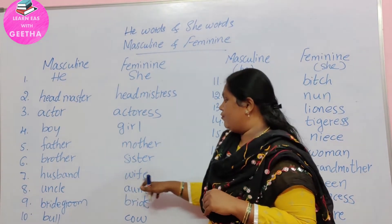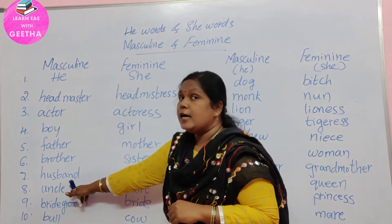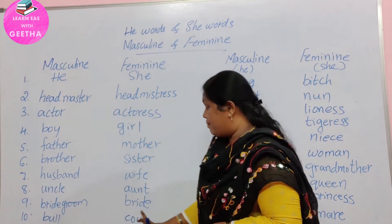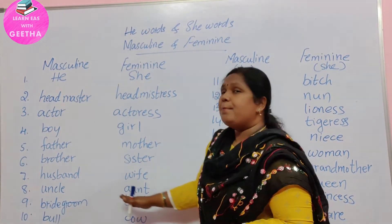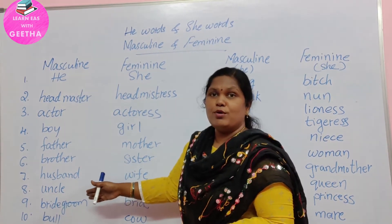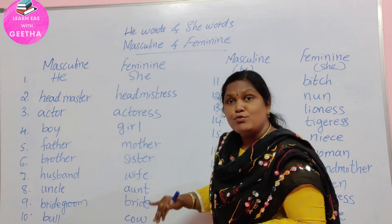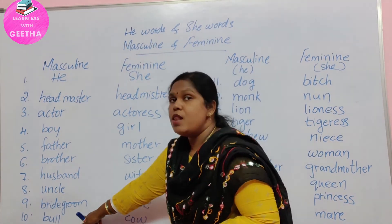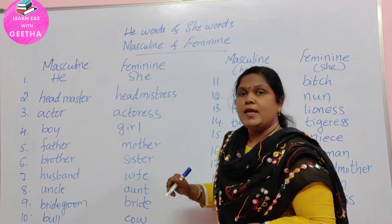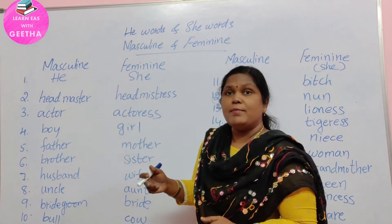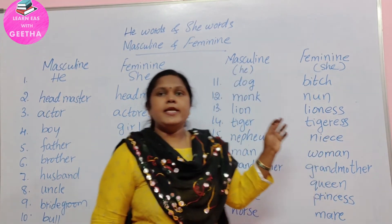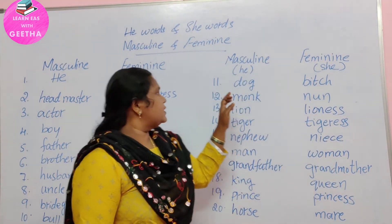Husband, wife. Uncle, aunt. Bridegroom — that means 'pellikoduku' (groom). Bride — that means 'pellikuduru' (bride). Bull — that means 'eddu' (ox/bull). Cow — that means 'avu' (cow). Bull, cow.